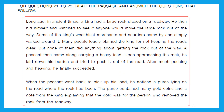For questions 21 to 25, read the passage and answer the questions that follow. Long ago in ancient times, a king had a large rock placed on a roadway. He hid himself and watched to see if anyone would move it. Some of the king's wealthiest merchants and courtiers came by and simply walked around it. Many people loudly blamed the king for not keeping the roads clear, but none did anything about the rock. A peasant then came along carrying a heavy load, laid down his burden, and tried to push the rock out of the road. After much pushing and heaving, he finally succeeded. When the peasant went back to pick up his load, he noticed a purse lying on the road where the rock had been. The purse contained many gold coins and a note from the king explaining that the gold was for the person who removed the rock from the roadway.